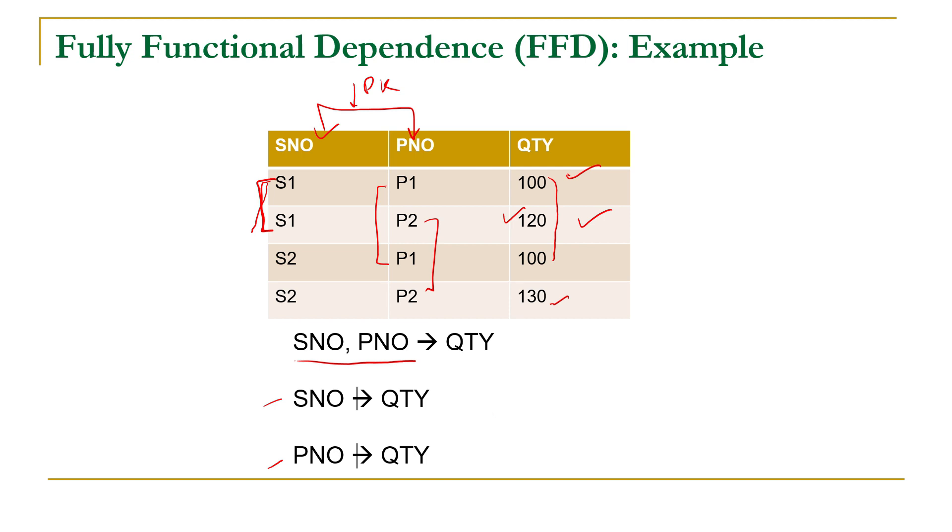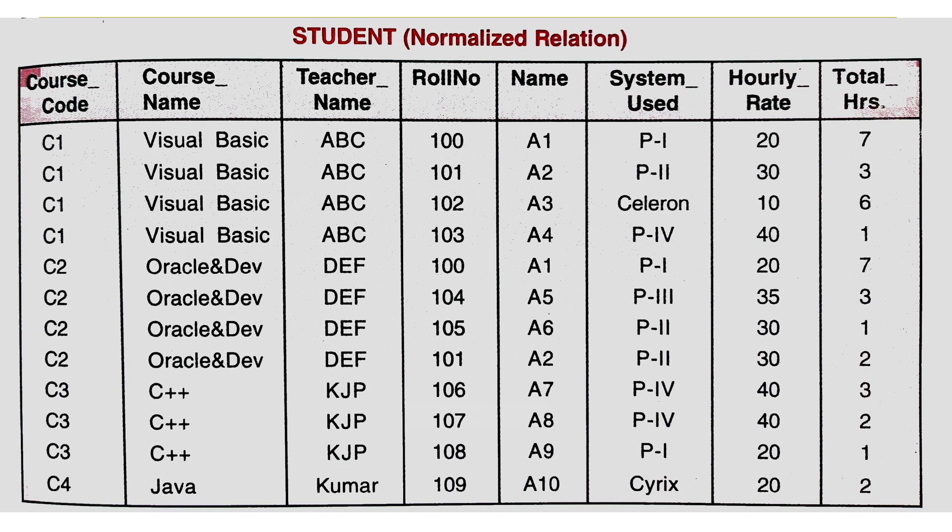Now let us come to our database. In the previous session we discussed that the primary key in this dataset is a combination of course code and roll number. This dataset is already in first normal form, but we discussed that there are some anomalies: insert, update, and delete anomalies. In order to remove these anomalies we have to apply second normal form.